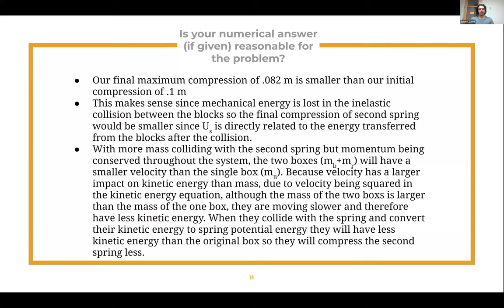Our final maximum compression of 0.082 meters is smaller than our initial compression of 0.1 meters. This makes sense since mechanical energy is lost in the inelastic collision. With more mass colliding with the second spring but momentum conserved, the two boxes together have a smaller velocity than the single blue box. Because velocity is squared in the kinetic energy equation, it has a larger impact than mass. Although the combined mass is larger, they move slower and have less kinetic energy, so they compress the second spring less.